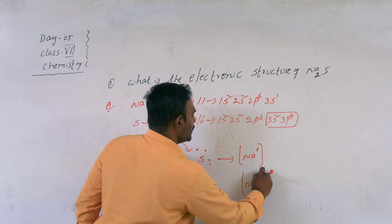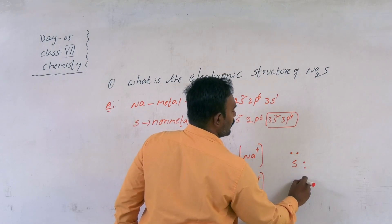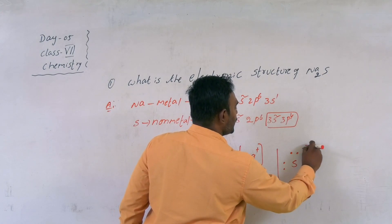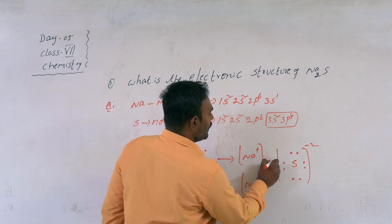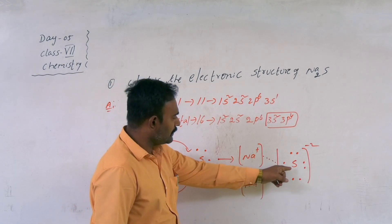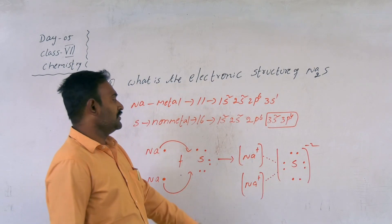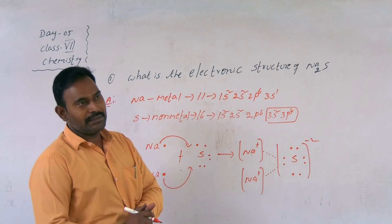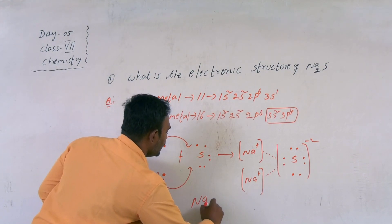Previously sodium atoms, now sodium ions — 2 ions. Sulfur gains 2 electrons from the 2 sodium atoms, so sulfur's octet is completed and sodium's octet is also completed. An electrostatic force is present between these ions. The charge of sulfur is minus 2 and the charge of sodium is plus 1, so the formula is Na₂S.